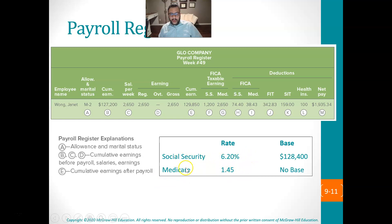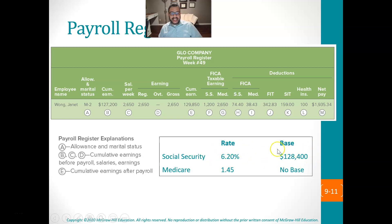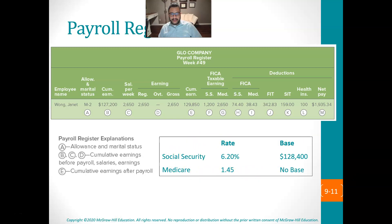Regarding FICA taxes: social security is 6.2% of the first $128,400 that people make. Anything above that, you don't pay on. But for Medicare, you pay 1.45% on everything — there is no cap.